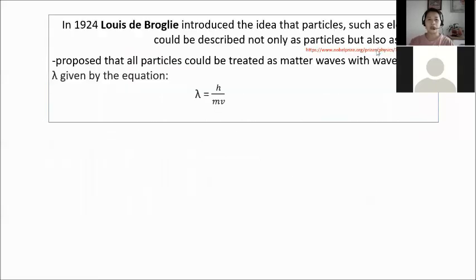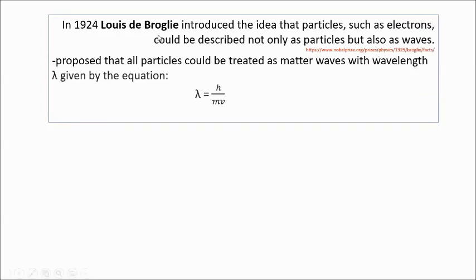In 1924, Louis de Broglie introduced the idea that particles such as electrons could be described not only as particles but also as waves. He proposed that all particles could be treated as matter waves.